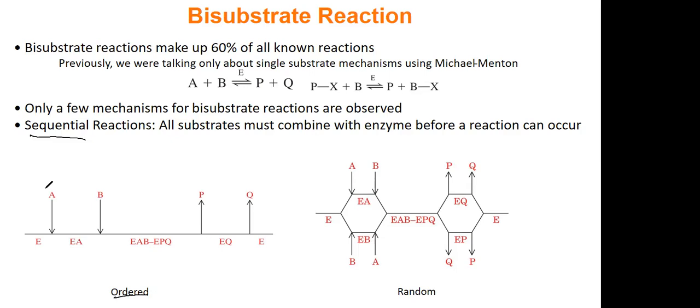Ordered sequential means that one substrate always binds before the second one. So in our example here, A will always bind to the enzyme to form our enzyme plus substrate A complex. And only after A is bound will B be bound. That's different than random. Random is A or B can bind in any order. And when we look at the products in order, what usually happens is that a product will always come off. So the product P, then the other product will come off, Q.